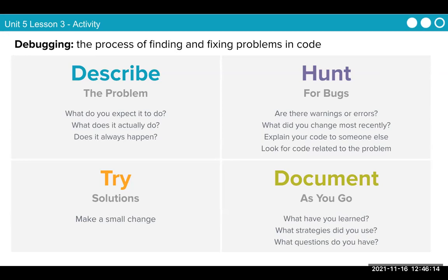Try solutions. Make a small change — don't do anything drastic. Try checking your code after every line you write. Don't write four lines and then wonder why it's all not working. Document as you go: what did you learn, what strategies did you use, what questions do you have?